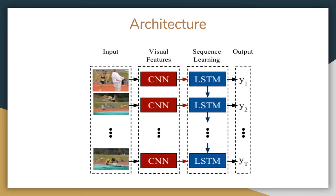This is the basic architecture of the system, where a video is given as input to the CNN. The CNN takes the video frame by frame, extracts features from it, and gives those features to the LSTM, which does sequential learning and gives the output — a sentence which describes the video.